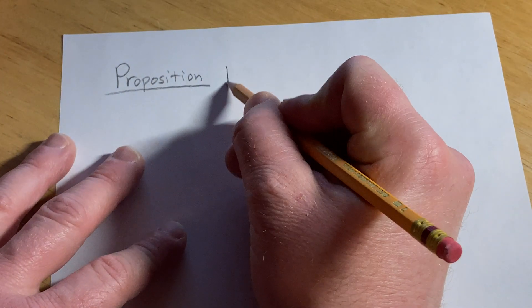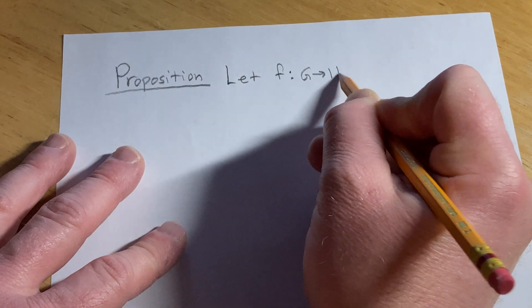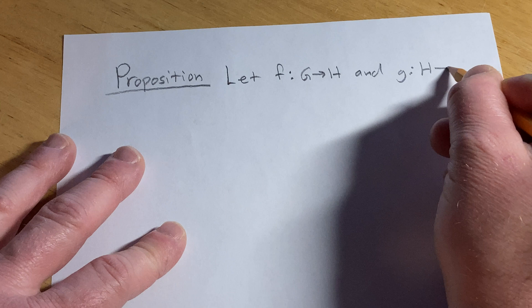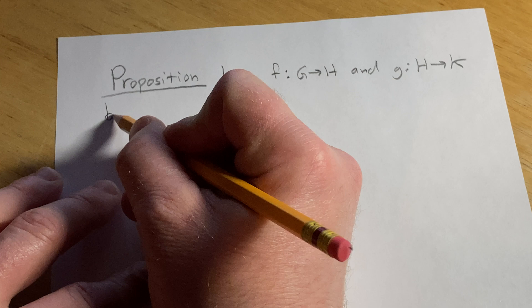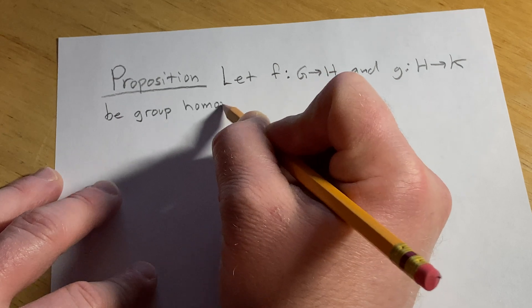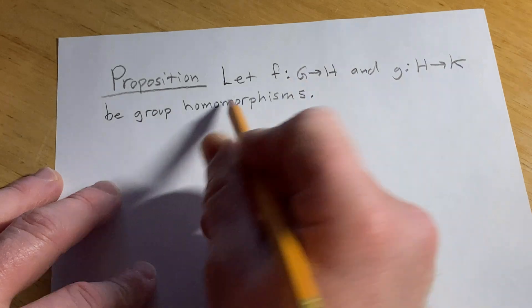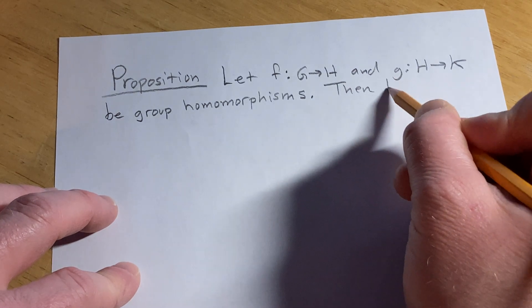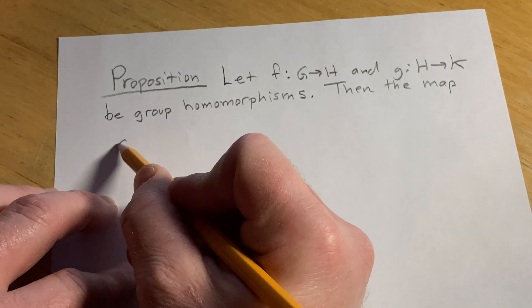It's good stuff. So let's look at f from G to H, and we're going to have g from H to K. Let these be group homomorphisms. Okay, so we're going to let these be group homomorphisms. Then the claim is, and the map we're looking at here is g∘f.